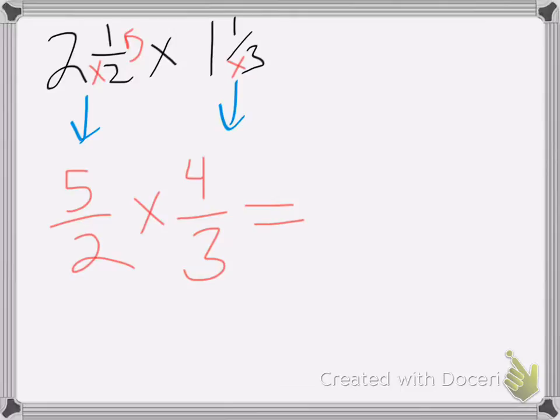Multiply them straight across. Five times four is twenty. Two times three is six.